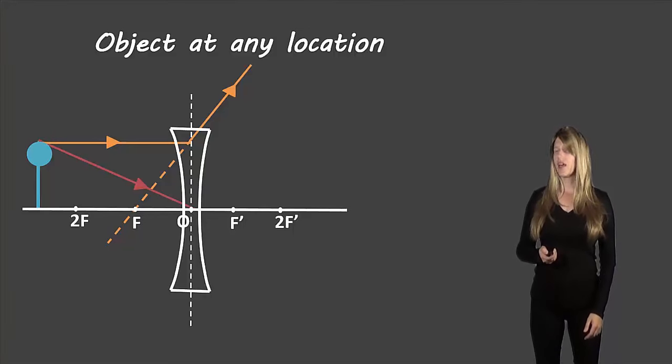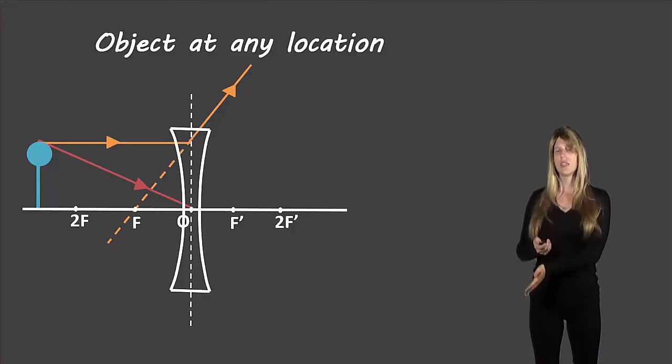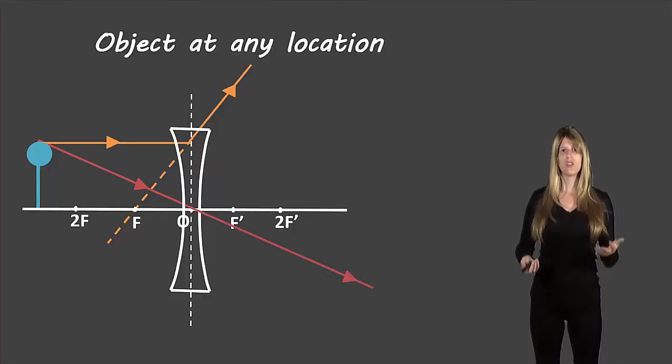Our second rule is that an incident light ray that travels through the optical center will continue on in the same direction. And again, we need to draw two arrowheads on that line, one to show the incident ray and one to show the refracted ray traveling in the same line.